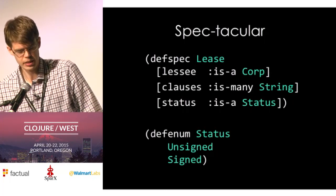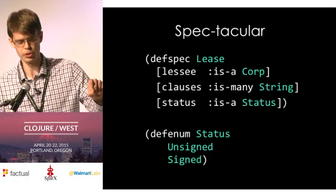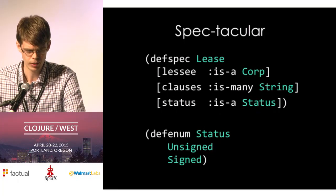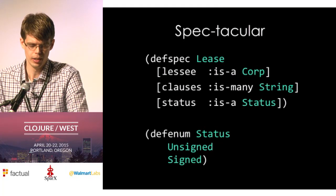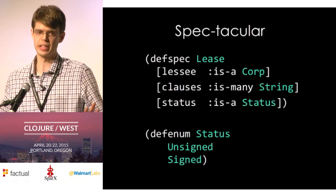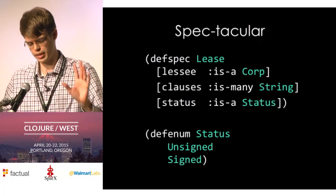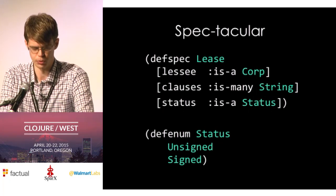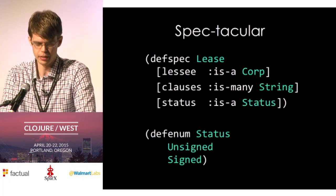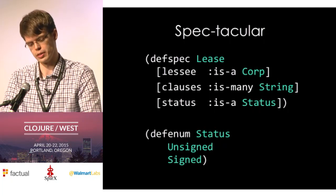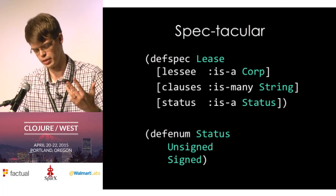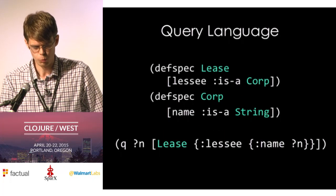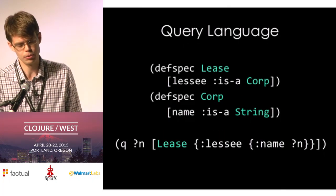Here's a lease that can have a lessee, which is a corporation — and crucially, this can only point to corporations. These are also namespaced, so there's a status field here, and other things can have status fields with different types. We also have enums: status can be unsigned or signed. This turned into more of a union type, where these variants can themselves have fields and properties. Once we had all that written down, we could start doing cool things with it — introspecting our specifications, printing documentation.